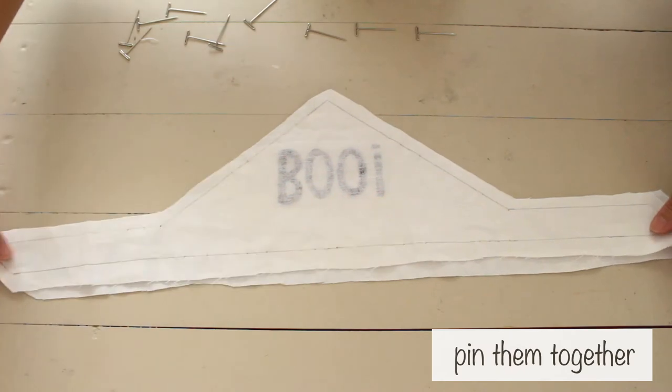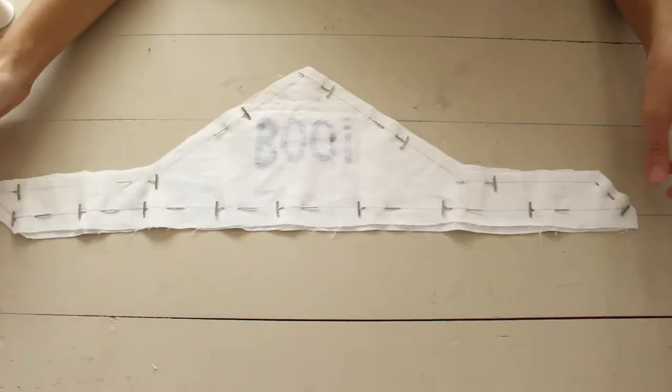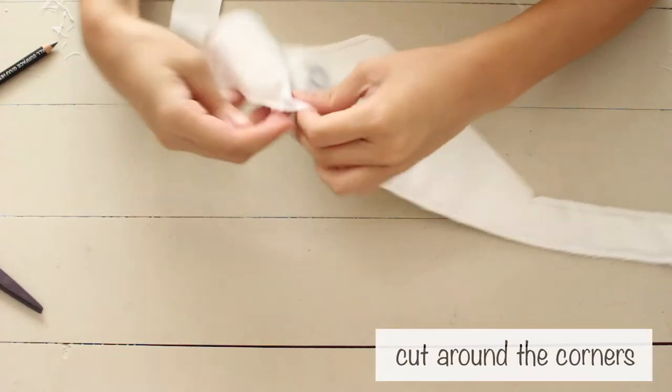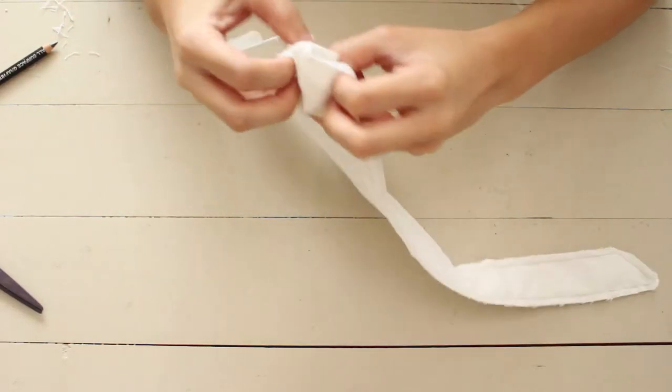Next, pin the 2 pieces together backs facing out. Now, sew it and leave an opening in the rectangular area. Cut around the corners and turn it inside out. Close it with a ladder stitch.